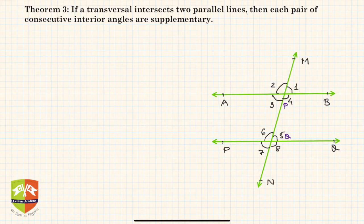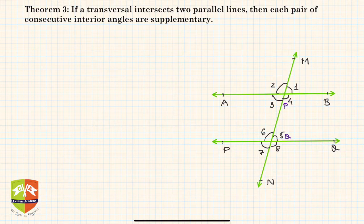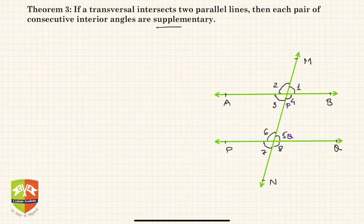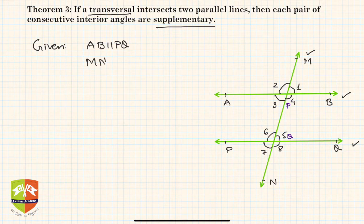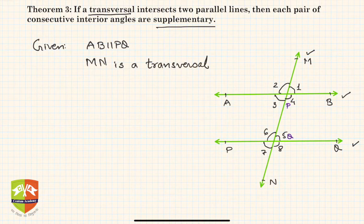In this theorem, it's given that a transversal intersects two parallel lines, and we have to prove that each pair of consecutive interior angles are supplementary. Supplementary angles are angles which sum up to 180 degrees. Here, MN is the transversal intersecting AB and PQ. So let's write: Given — AB is parallel to PQ, and MN is a transversal.